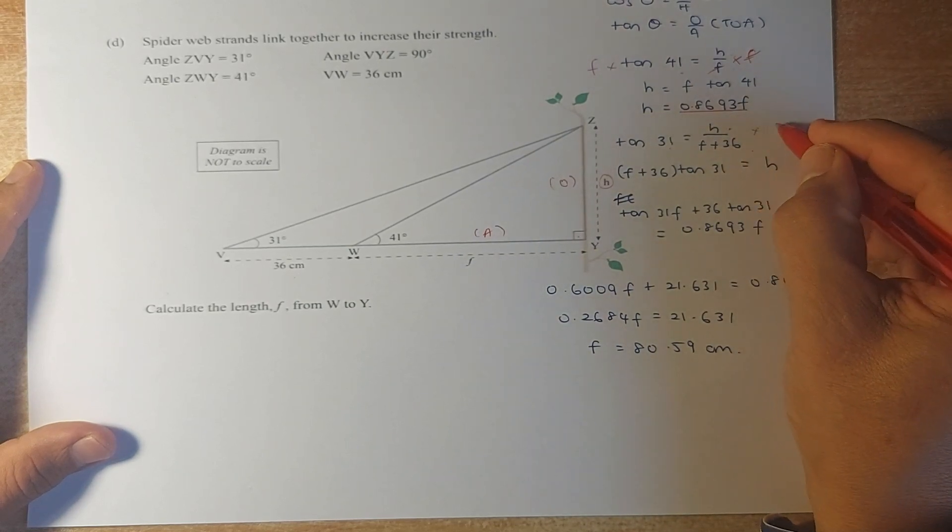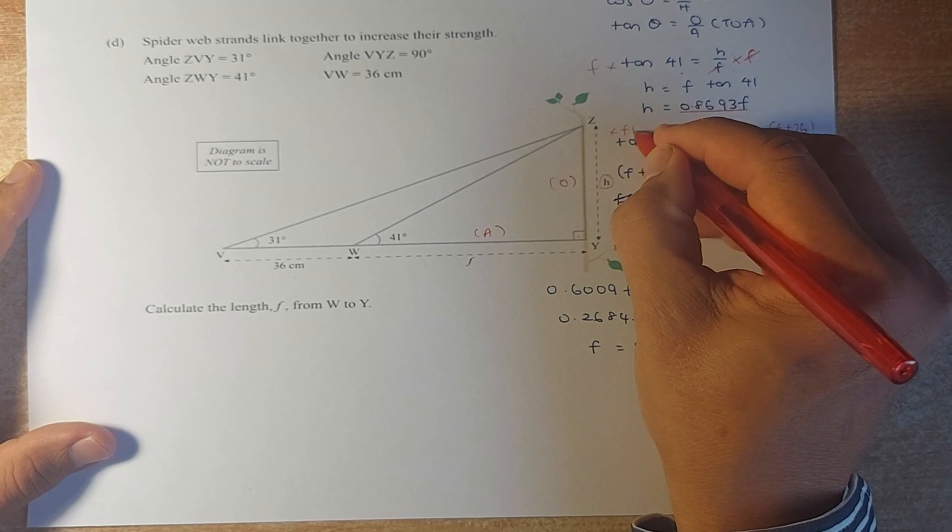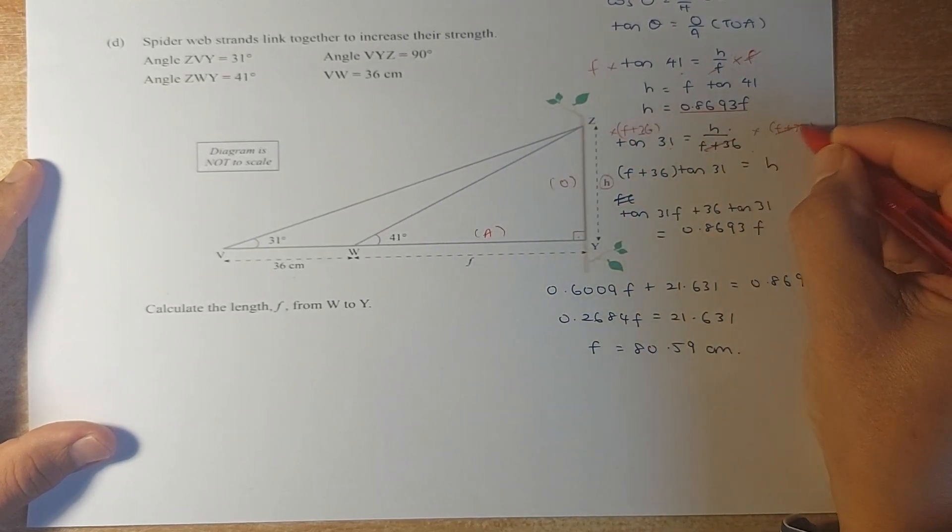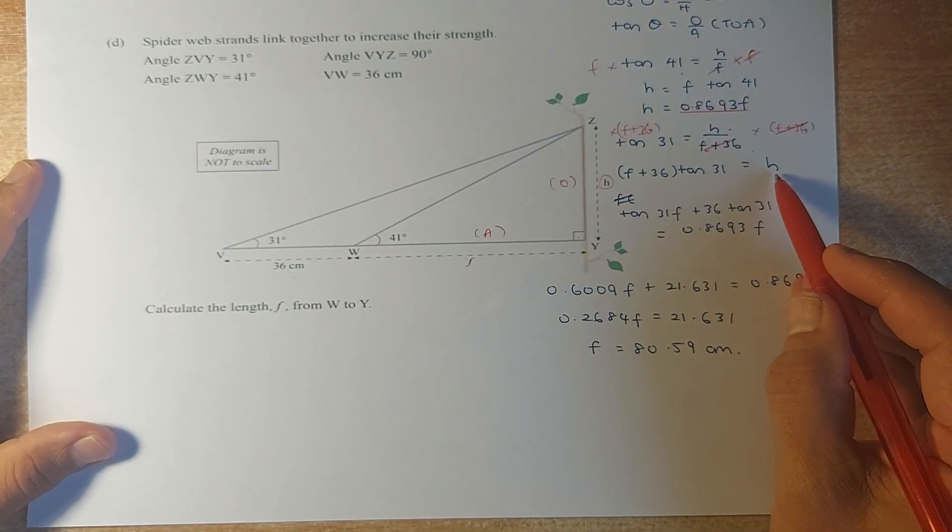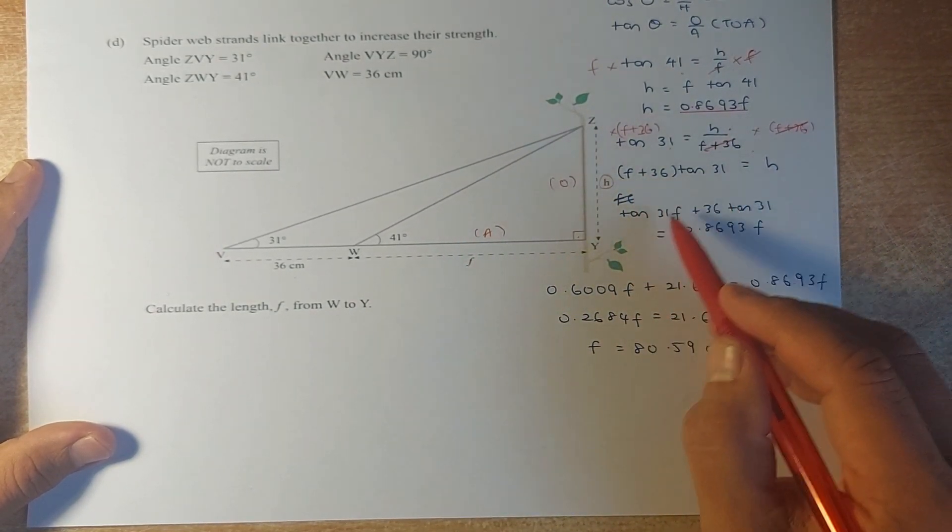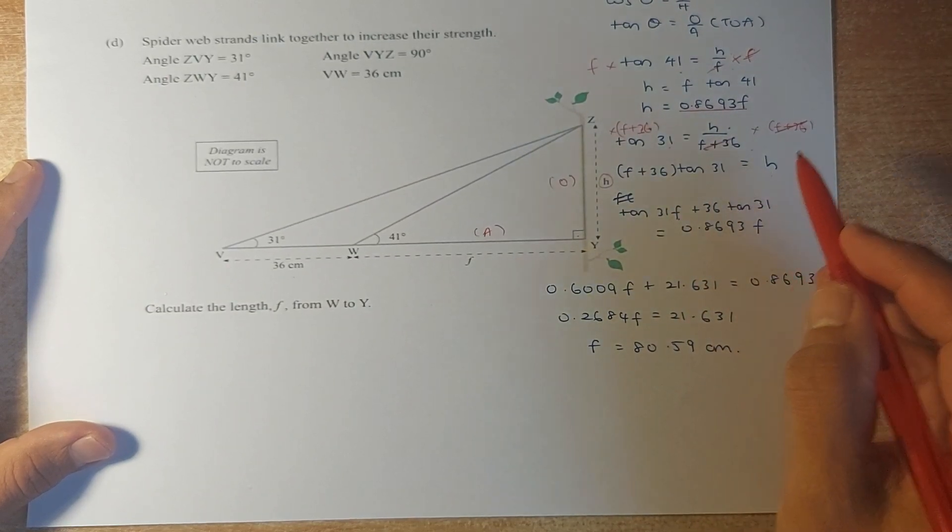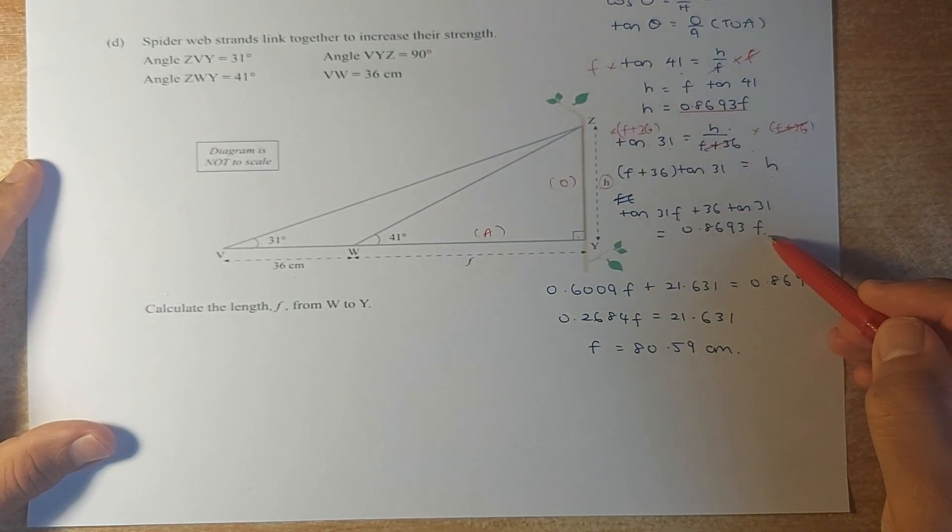Now you're going to multiply F plus 36 on both sides. And you will cancel out the bottom part here. So F plus 36 tangent 31 equals H. Expand it. So F tangent 31 plus 36 tangent 31 equals H. You have found that your previous H was 0.8693F. Substitute the H into that.